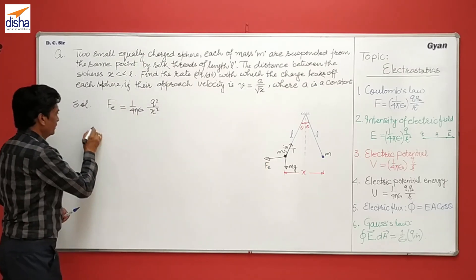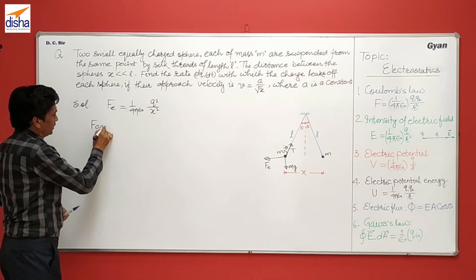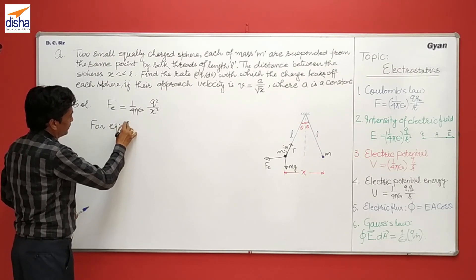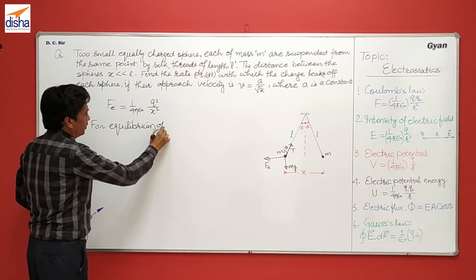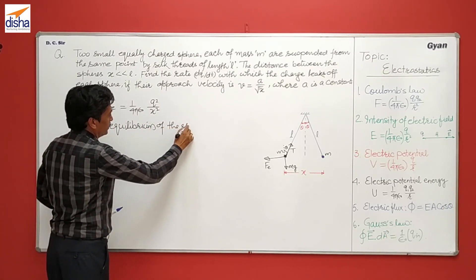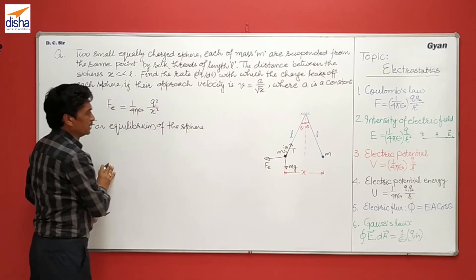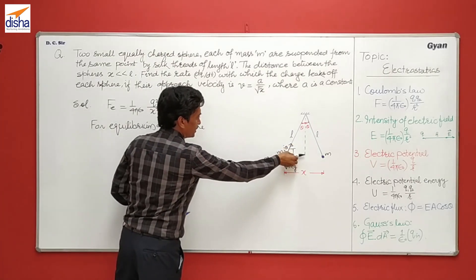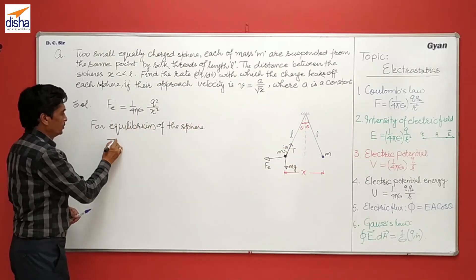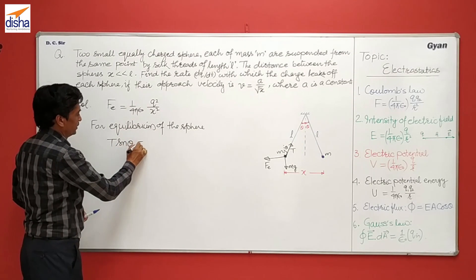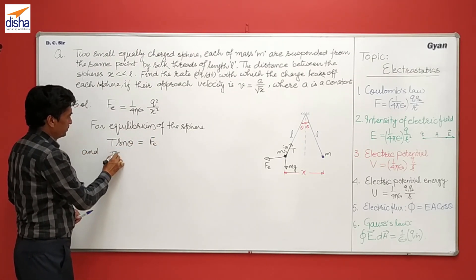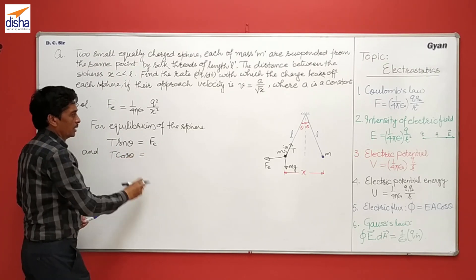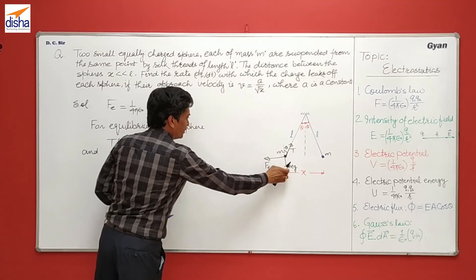Now for the equilibrium of this sphere, we have T sin theta is equal to Fe, and T cos theta, the vertical component, is equal to Mg.